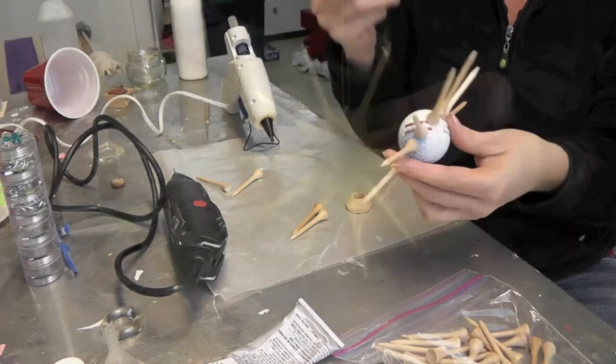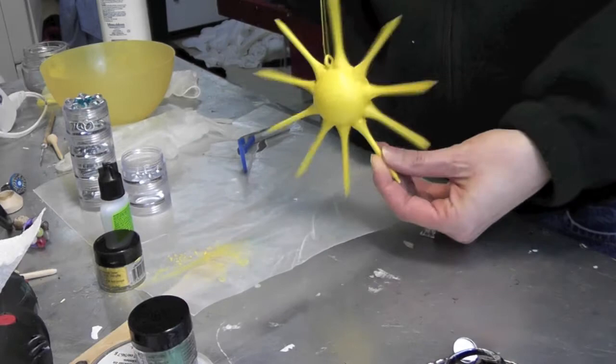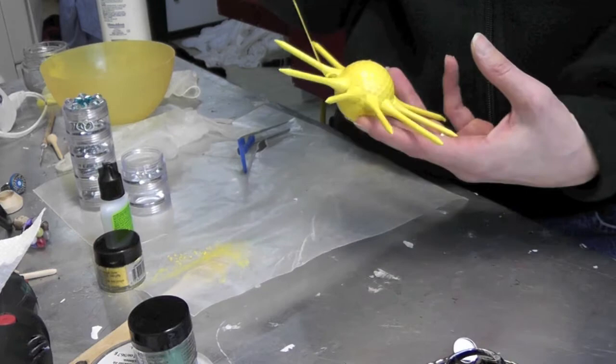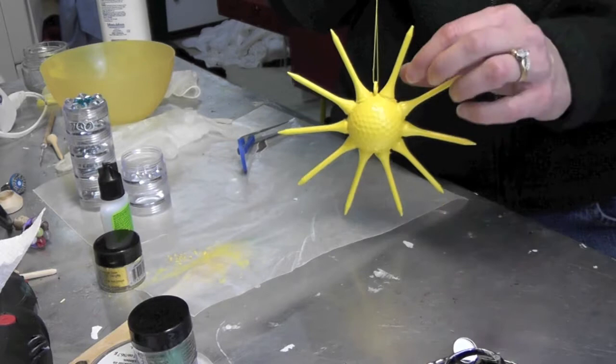Here's the golf ball sun all painted and ready to go. And you can hang this in a window, you can hang this outside. And if you're going to use it outside again I would use the stronger glue, not just the hot glue. But if you're going to hang this inside maybe in a window or just maybe from a light fixture or something you can easily use the hot glue for that. It's plenty durable enough for any interior use.